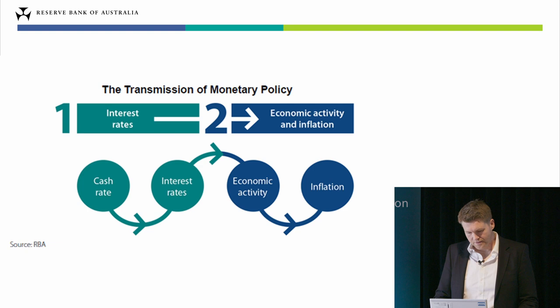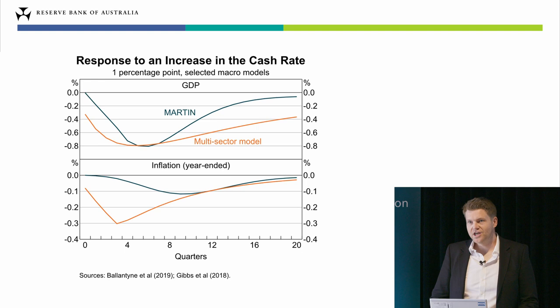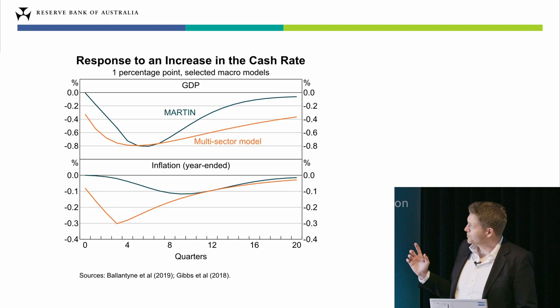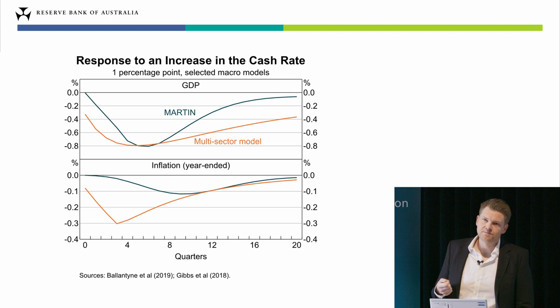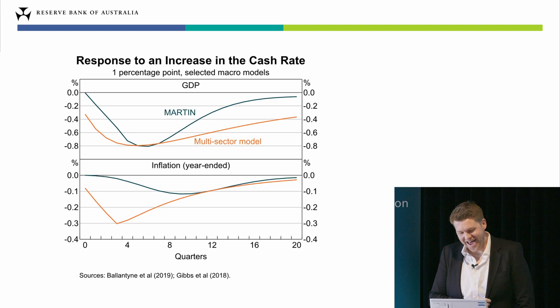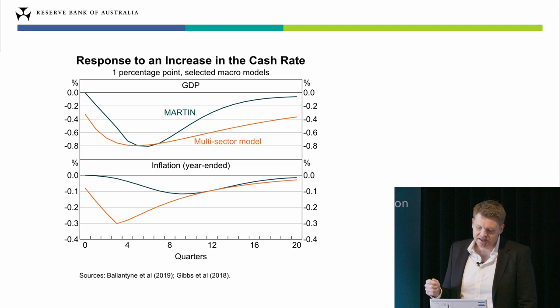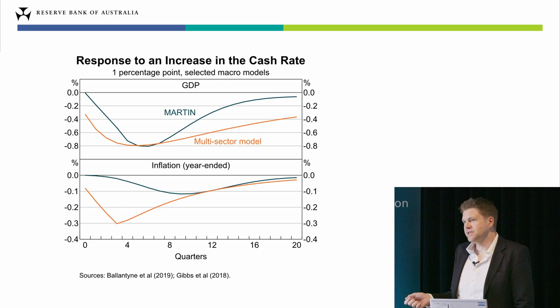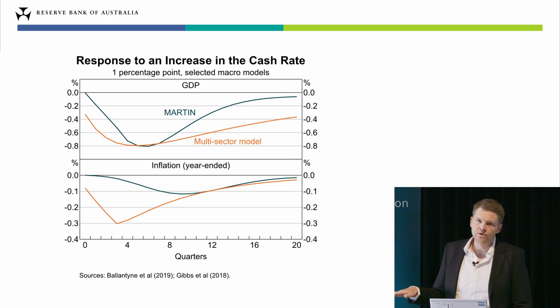What do we know about the overall effect of a change in the cash rate on the economy? Here are estimates from two of the big macroeconomic models we run at the bank. One is the Martin model, shown as the dark blue line, which is one of the models my team is responsible for running. If you look at the top panel, you can see that if we raise the cash rate by 100 basis points — one percentage point — these models show it will lower GDP by around 0.8 percent over the course of around a year and a half.